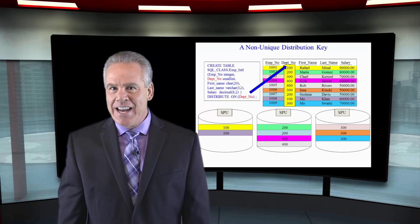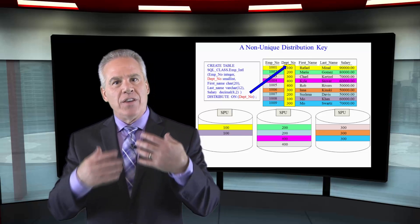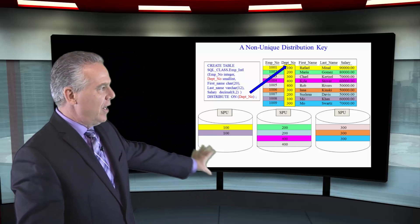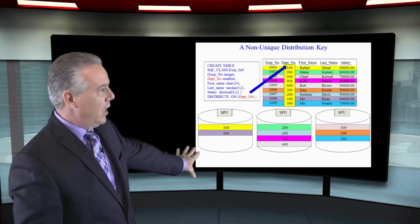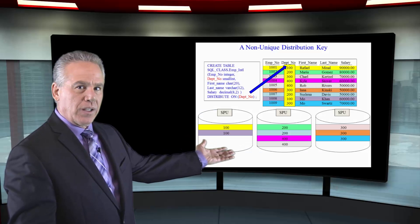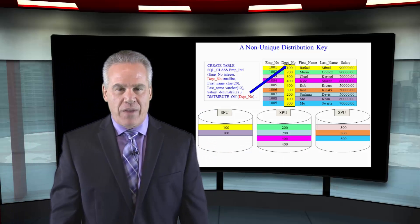Let's see that data again, but this time the distribution key we picked was DEPNO. Take a look at this. The data is not spread evenly, but it's reasonable, so it's probably going to be okay. Remember, a query is only as fast as the slow SPU. So we can see here that the data isn't perfectly distributed. But what do you notice about that?